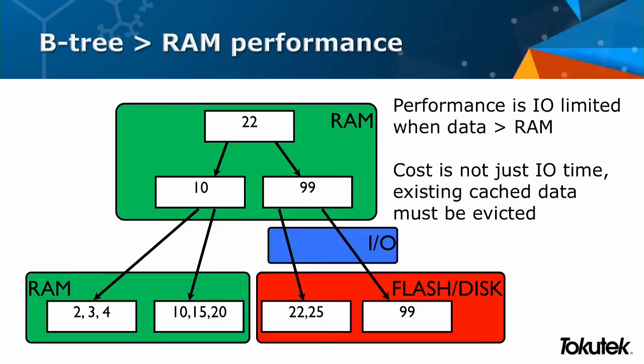There's a big downside to B-trees. They were created a long time ago, certainly in a time when data was different. We're all here talking about big data, about analytics, about fast. When a B-tree fits in main memory it's very quick, very efficient. When it doesn't, problems can occur — you're going to be IO-limited when your data is bigger than RAM. An important thing to note is the cost of IO. If 22, 25, and 99 are on flash or on disk, you could argue that flash is extremely fast, so the cost of IO is near zero. But it's not just the execution time of getting data from that device — it's also about your cache. You're going to be evicting data to bring new data in, the cache is thrashing, and performance is impacted.